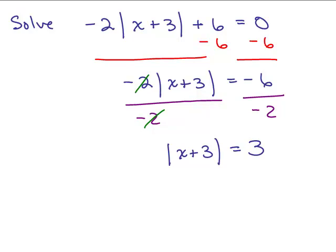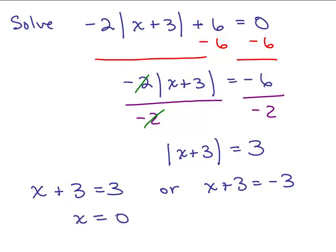Now we have an absolute value equaling a positive number, so we break it into two equations. What's inside the absolute value can equal 3, or it can equal negative 3. For the first equation, subtracting 3 from both sides gives x equals 0. For the second equation, subtracting 3 from both sides gives x equals negative 6. So this one has two solutions: 0 and negative 6.